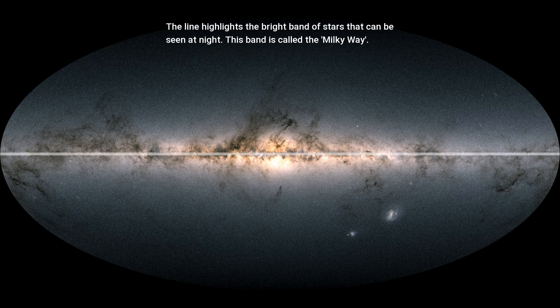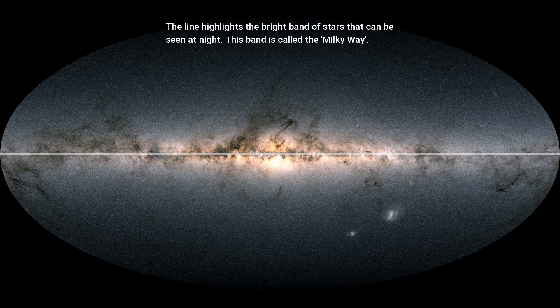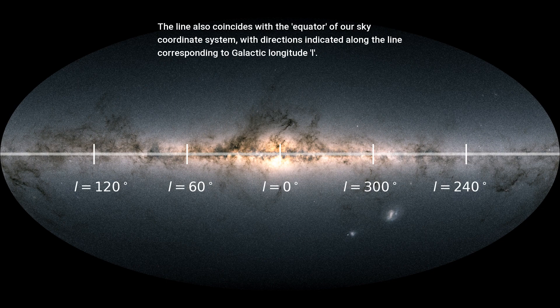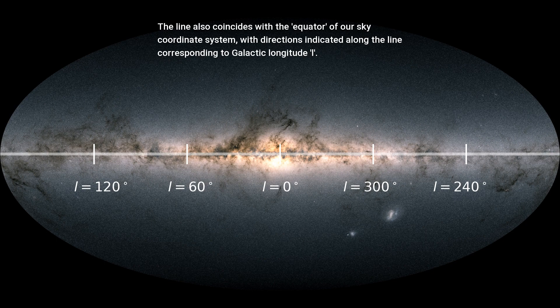The line highlights the bright band of stars that can be seen at night. This band is called the Milky Way. The line also coincides with the equator of our sky coordinate system, with directions indicated along the line corresponding to galactic longitude L.